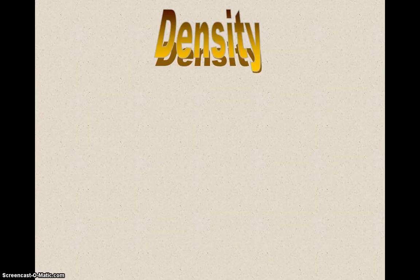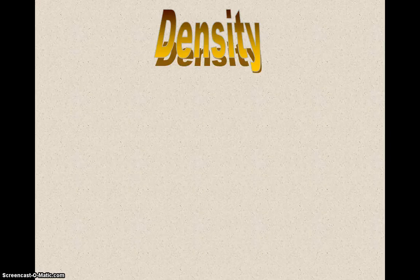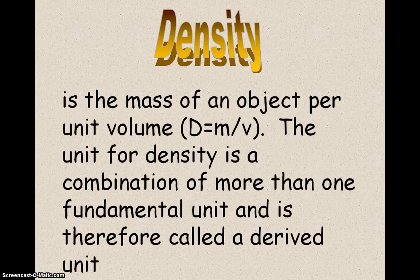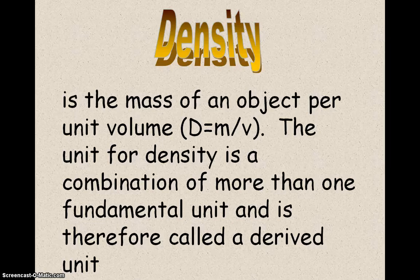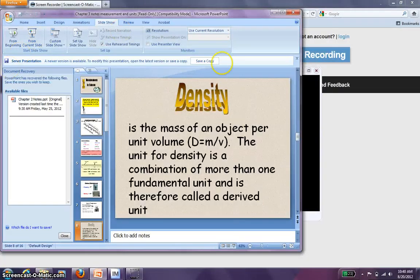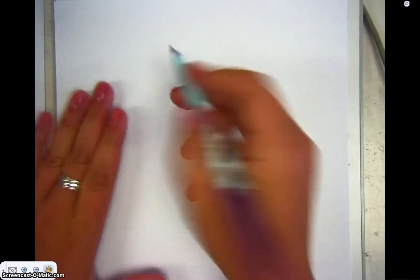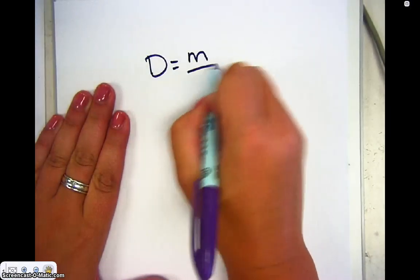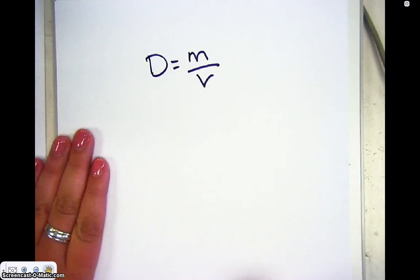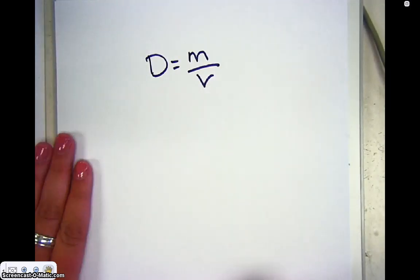Now the last quick thing I want to talk about is density. We've already talked about density in the video about physical properties. But I want to show a calculation and talk a little bit about it. Density is the ratio of mass to volume. And it's a derived unit. And I'm going to show you what that means. So I'm just going to do a quick example.